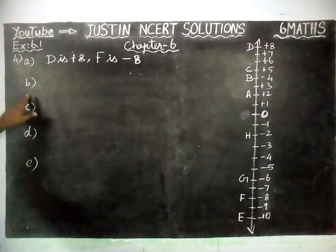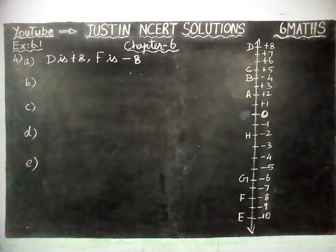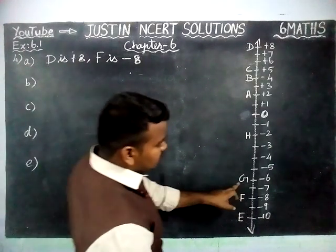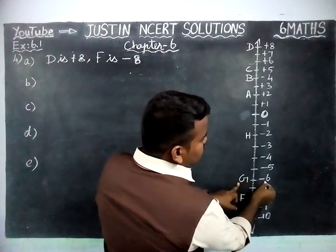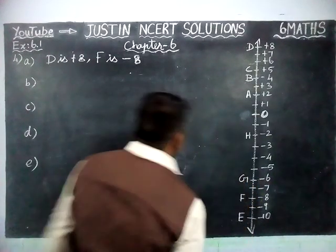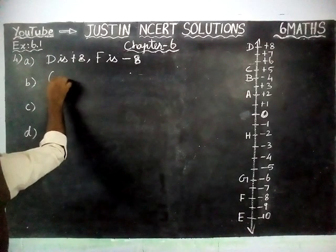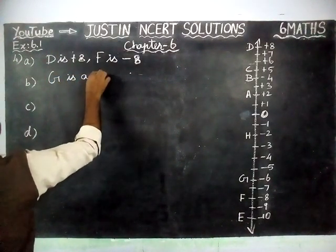Part B question is: is point G a negative integer or a positive integer? G is below 0, and minus 6 is a negative integer. So G is a negative integer.